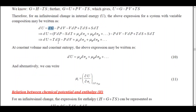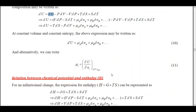At constant entropy and constant volume, the first two terms will vanish. So I get dU = μ_A dn_A + μ_B dn_B. I can alternatively write this as μ_i = (∂U/∂n_i) at constant S, V, and all other moles. This is the relation between chemical potential and internal energy.